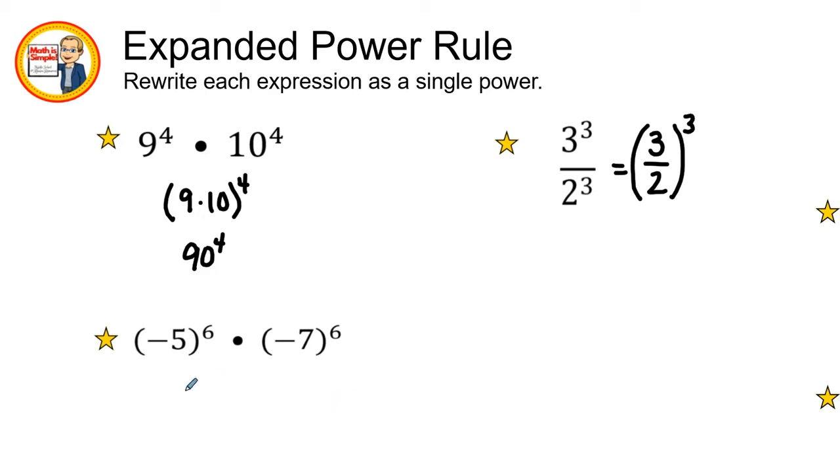So I can combine negative five times a negative seven, which gives us a positive 35, and then I'm going to keep that to the sixth power. Pretty easy, eh?